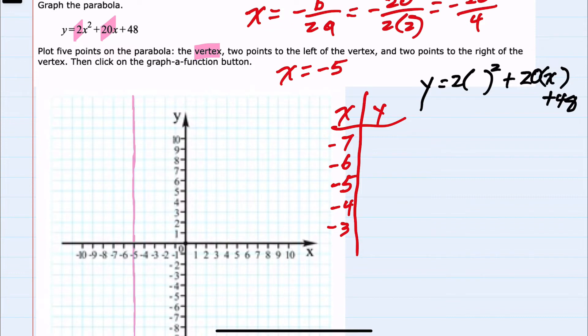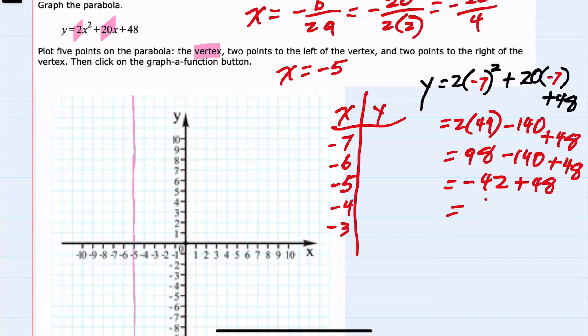If I replace the x's with minus 7, we would have 2 times negative 7 squared is 49. 20 times negative 7 is minus 140. Bring down the plus 48. 2 times 49 is 98 minus 140 plus 48. 98 minus 140 is negative 42 plus 48 gives us 6. So when we plug in negative 7, we get 6. We have our first point, negative 7, 6.